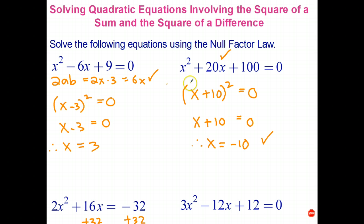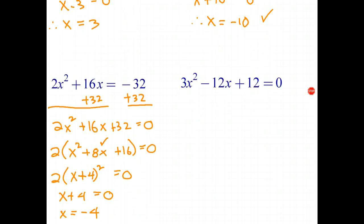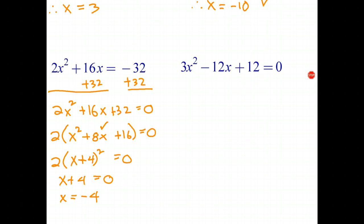And all of these equations that involve squares of sums and squares of differences only have one solution. Last one. We note here that we've got a factor of three, that's got a factor of three, that's got a factor of three. So the first thing we're going to do is take out the common factor of three.